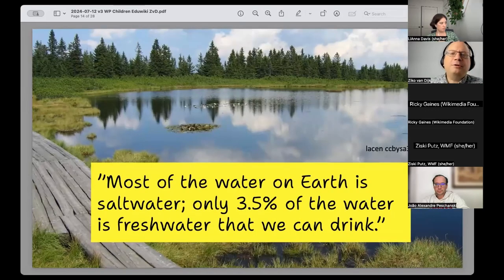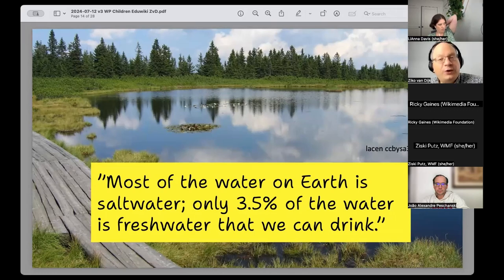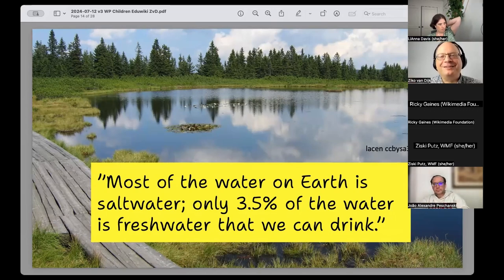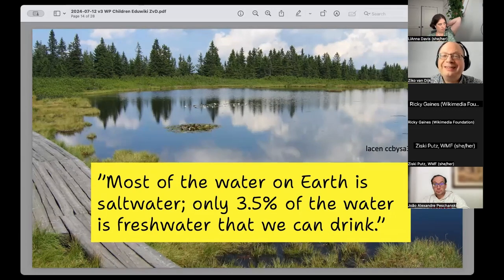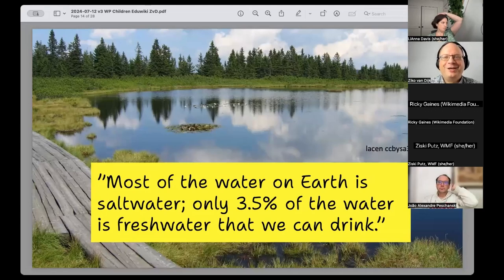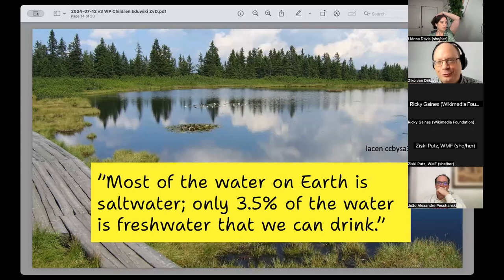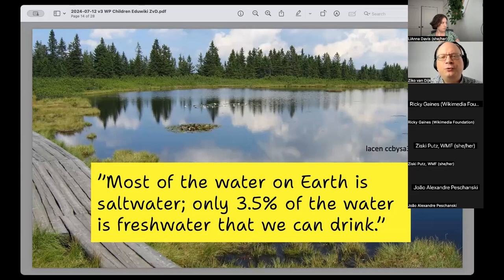And about understandability, here an example. Most of the water on earth is salt water. Only 3.5% of the water is fresh water that we can drink. All right, many grown-ups can easily understand the sentence. However, is this suitable for children? With the Klexicon we examined school curricula to determine when German children typically learn about decimals and percentages. The age varies depending on the state and school type. Some children learn about them at 10 years old. Others might be 12 years old or even older. And then it takes time for children to fully grasp these concepts and use them confidently. For this reason, we avoid using decimals and percentages at all.